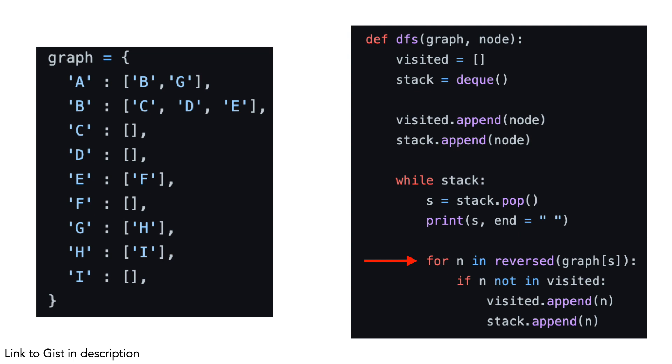We iterate through the adjacent nodes. Notice the reversed function that adds the rightmost node into the stack first, so we visit it last. If the adjacent node has not yet been visited, we add it both to the visited list and the stack.